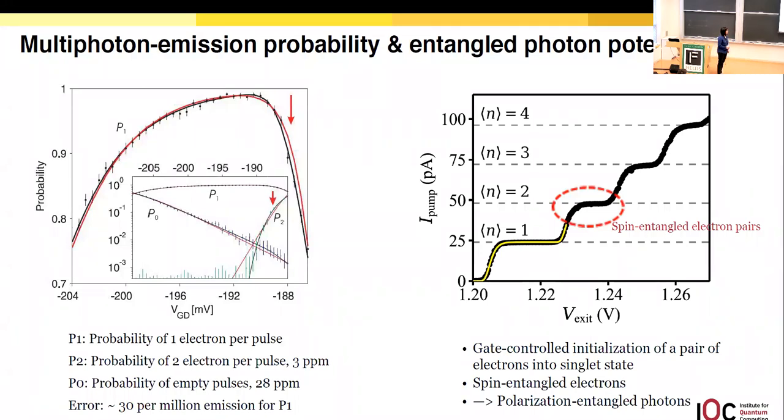Another great point of our design is the potential to reach entangled photon pairs by simply changing electrical input. If the pump is working on the second plateau and we could initialize that pair of electrons to a singlet state, they would become spin polarized being entangled, then that would be preserved into polarization entangled photons. Which means our device could not only work as a single photon source but also as an entangled photon source by simply changing the electrical parameters.